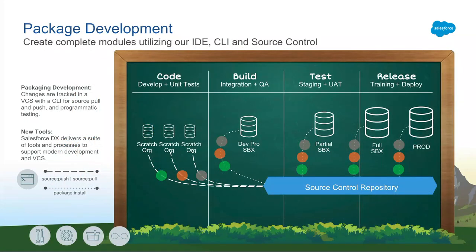Package development is driven from source. Last year, we announced this new environment called Scratch Orgs. Scratch Orgs are empty, ephemeral, and highly customizable environments that you can use for controlling the environment in which you want to develop your package source. When you're building packages, you want a clean, isolated environment where you can define the dependencies you want to associate with your package. That is exactly what Scratch Orgs are used for.